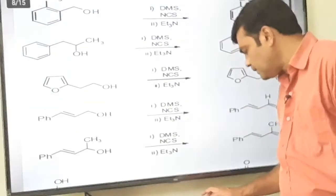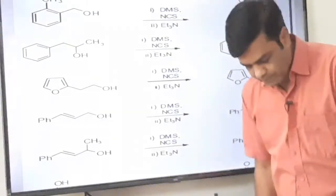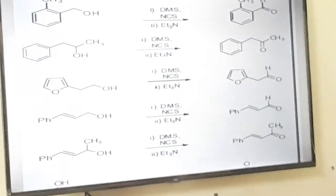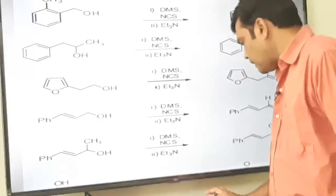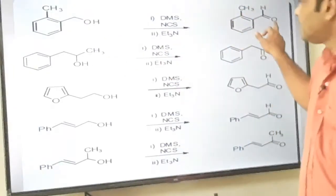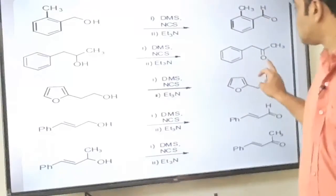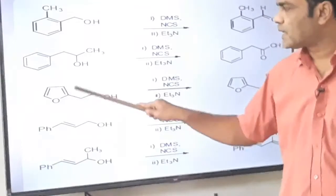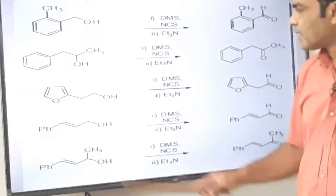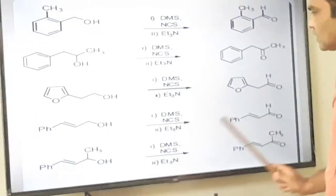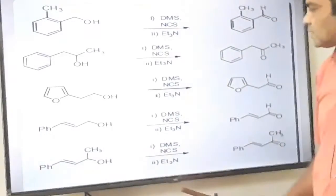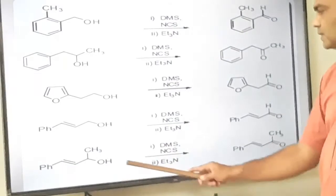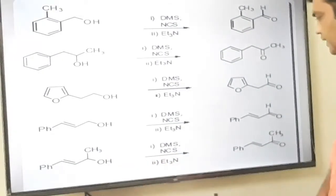In the applications of Corey-Kim oxidation: primary alcohol is oxidized to aldehyde, secondary alcohol is oxidized to ketone, and primary alcohol is oxidized to aldehyde — without affecting the tetrahydrofuran heterocyclic ring. The carbon-carbon double bond is also not affected. Here also carbon-carbon double bond is not affected, and the primary alcohol is oxidized to aldehyde only.